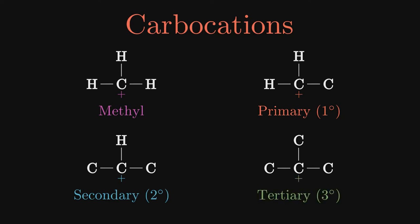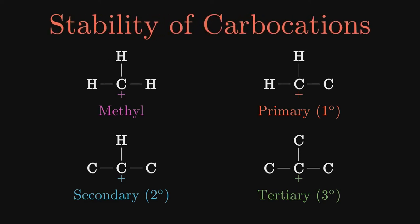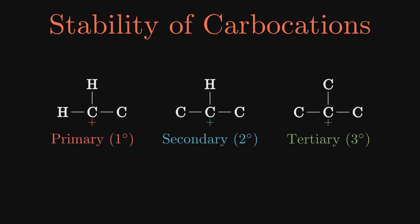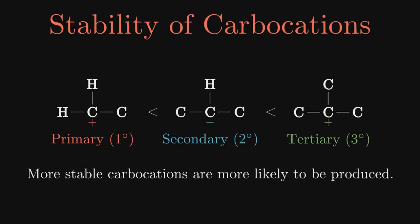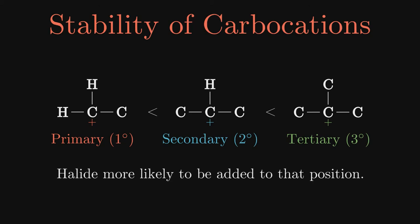Luckily for us, the stabilities of the carbocations are also as they were for the radicals. The methyl cation is basically not worth considering, and tertiary carbocations are far and away the most stable, followed by secondary, then primary. Like the radicals, the more stable ones are more likely to be produced. This means that the halide is more likely to be added to that position. Thus, the type of carbocation formed influences product formation.